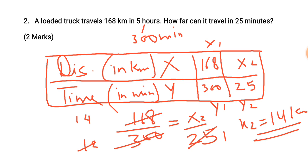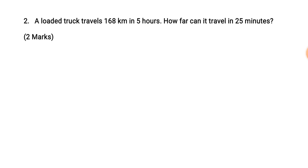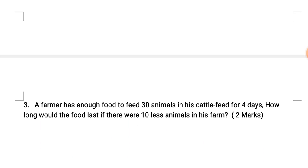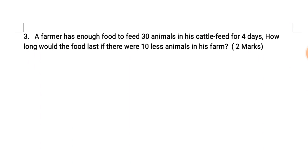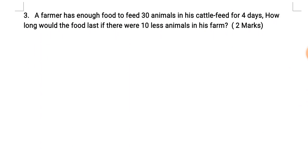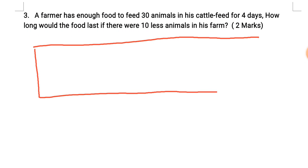You can also check your answer. Next, question number 3: a farmer has enough food to feed 30 animals in his cattle for 4 days. Then 10 fewer animals — so 20 animals. You have to find how many days the food will last.